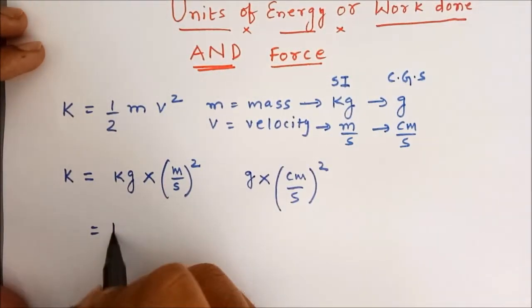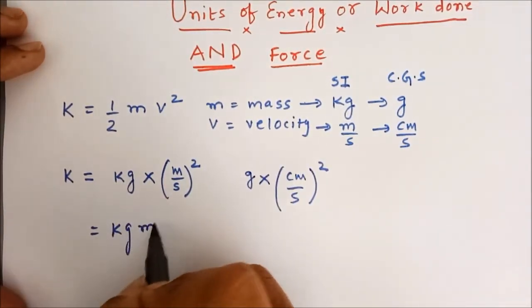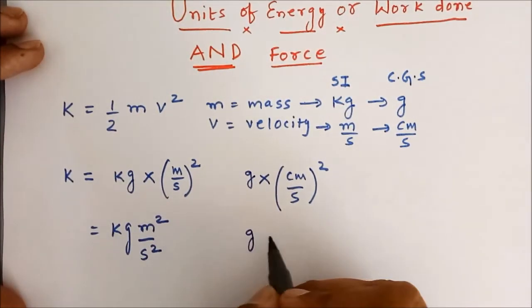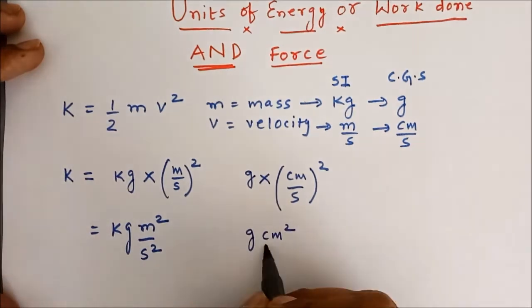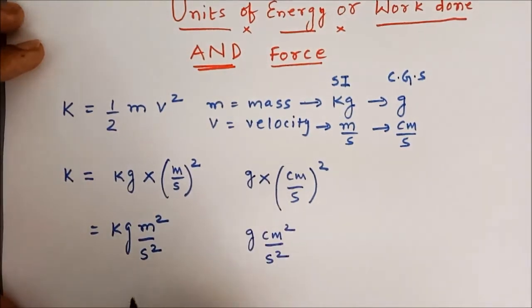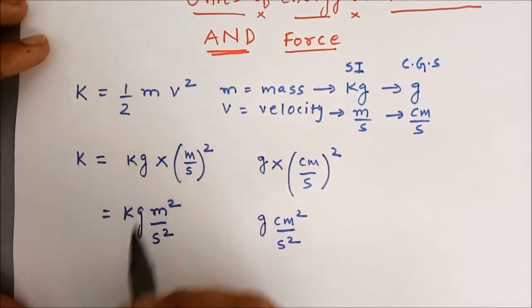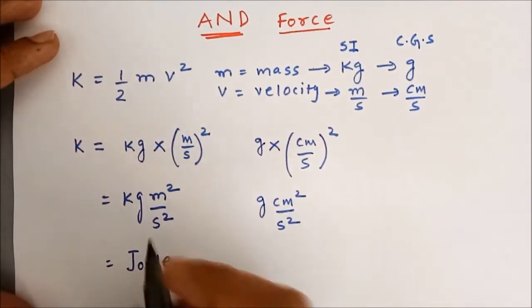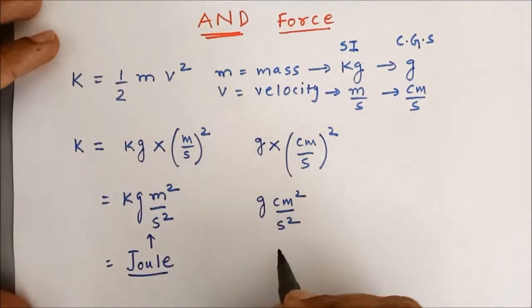Now, this is kg meter square upon second square whereas this is gram centimeter square upon second square. Now, this is called Joule, the above one this is called Joule whereas this one is called erg.